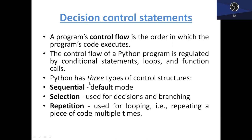Python has three types of control structure. One is sequential, which is the default mode. In sequential, we write simple programs like addition of two numbers or calculating simple interest, where statements are read and executed one by one from first to last. Next is selection, which is used for decision and branching. For example, we use if, if-else, nested if, and if-elif-else statements. In selection, we decide: if a particular condition is true, then that if statement's part will be processed.